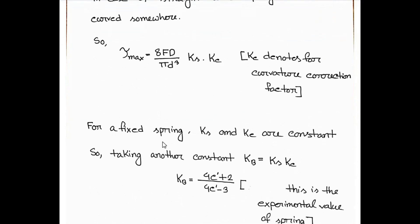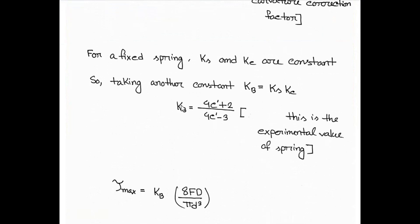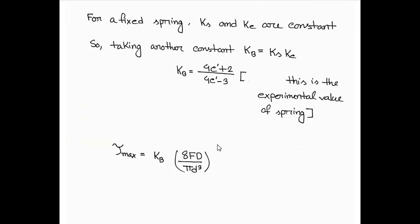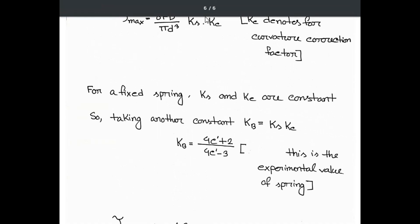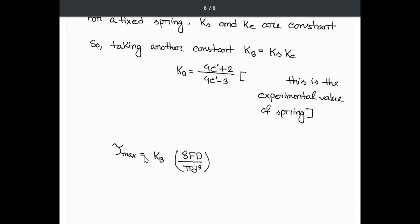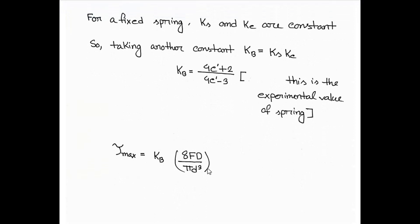For a fixed spring, k_s and k_c are constants, so we're replacing these two constants with another constant k_b. This is the experimental value of k_b. We can see we're replacing k_s times k_c by k_b. Here is our tau max equal to k_b times 8FD by pi d small d cube.